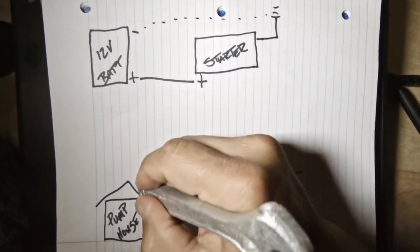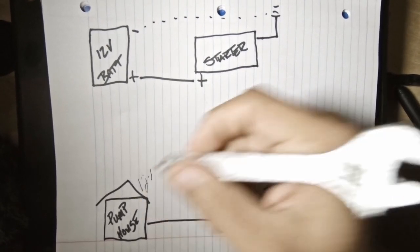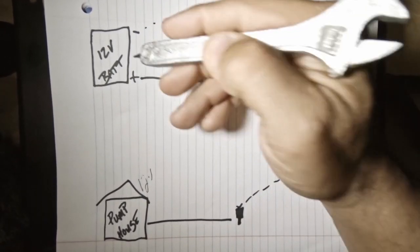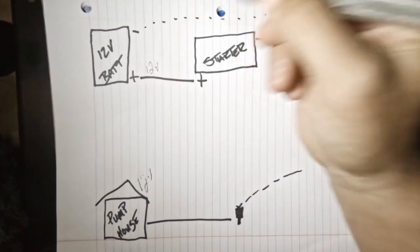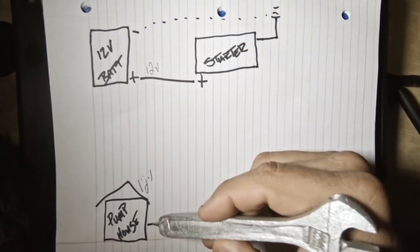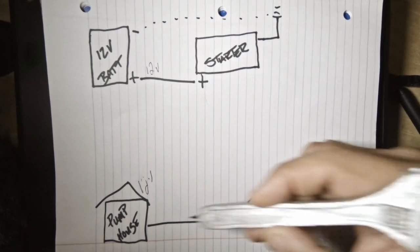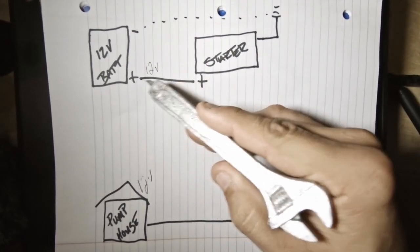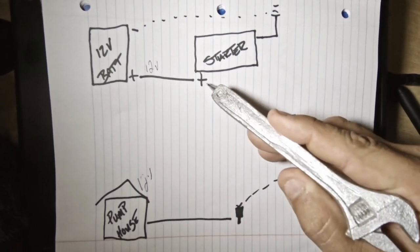So this pump house will put out 12 volts of pressure. Now when we're testing, same thing up here, 12 volts of voltage. When we're testing we should see 12 volts anywhere along this circuit, just like up here we would see 12 volts anywhere along here.